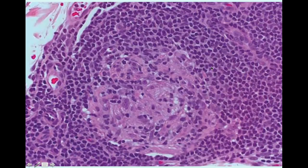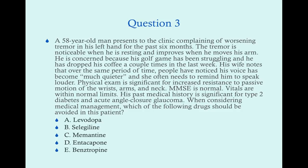Question three: A 58-year-old man presents to clinic with worsening tremor in his left hand for six months. The tremor is noticeable at rest and improves with movement. His wife notes his voice has become much quieter. Physical exam shows increased resistance to passive motion of the wrists, arms, and neck. Mini-mental status exam is normal. Past medical history includes type 2 diabetes and acute angle closure glaucoma. Which of the following drugs should be avoided? Options: A) levodopa, B) selegiline, C) memantine, D) entacapone, or E) benztropine.